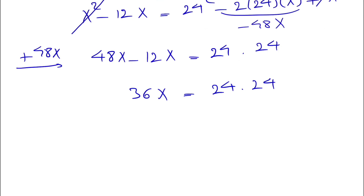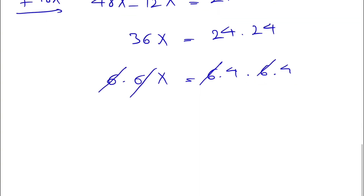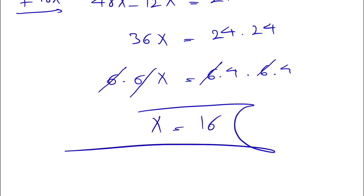We have 36x equals 24 times 24, which is 576. Since 36 is 6×6 and 24 is 6×4, we can cancel the 6 from each side: 6x equals 6×4×4, giving us x equals 16, which is the final answer.